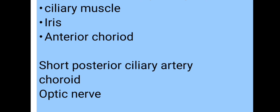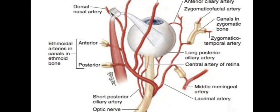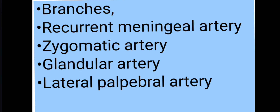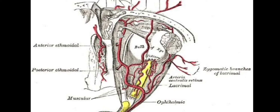There is also the cilio-retinal artery, seen in 15 to 20 percent of the population; it enters the retina at the lateral border of the optic nerve and supplies the retina between the disc and the macula. The lacrimal artery runs on the upper border of the lateral rectus muscle, passes through the lacrimal gland anteriorly, and sends terminal branches to the upper eyelid and conjunctiva. Its four main branches are the recurrent meningeal artery, zygomatic artery, glandular branches, and the lateral palpebral artery.